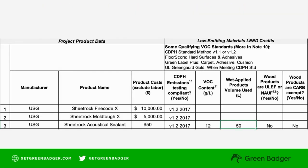Looking back at the LEED cover sheet, the first two products are wall products, so we need to include an emission certificate that meets the CDPH standard. The sealant falls into the adhesives and sealants category, so this also needs to meet the compliance requirements. For the sealant, we need an emission certificate and we need to show the VOC content. VOC content can be found in an MSDS sheet, a product data sheet, or lab certificate.